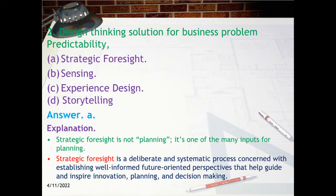Question 2: Design Thinking Solution for Business Problem — Predictability. Options: A. Strategic Foresight, B. Sensing, C. Experience Design, D. Storytelling. Answer: A. Strategic Foresight.